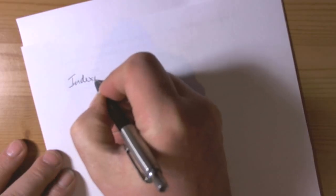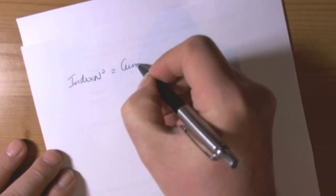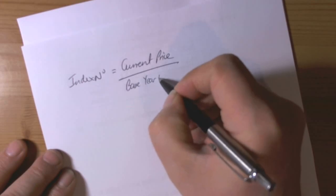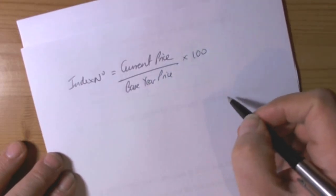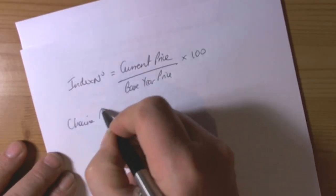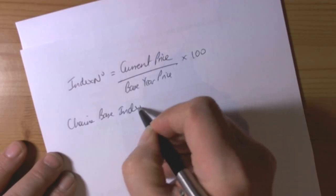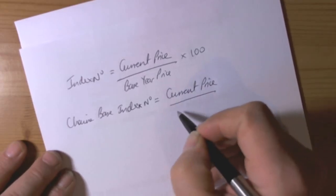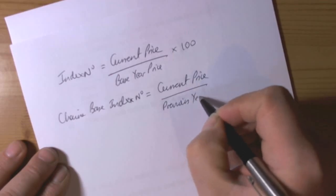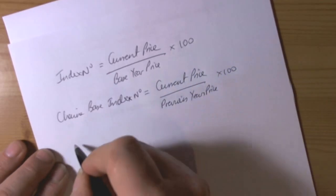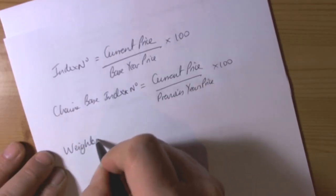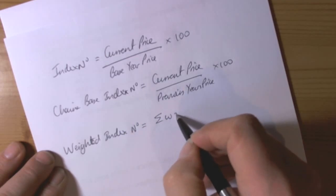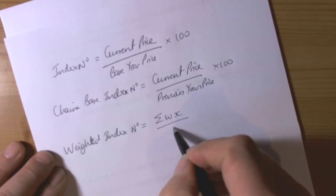The basic idea of an index number: to find the index number, we take the current price, divide it by the base year price, and then multiply by 100. For a chain base index number, we take the current price divided by the previous year's price times 100. For a weighted index number, we take the sum of the weightings times the index numbers and divide by the sum of the weightings.